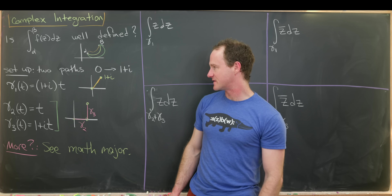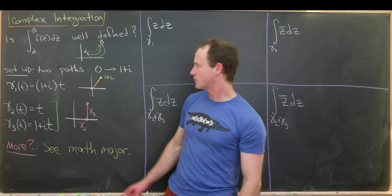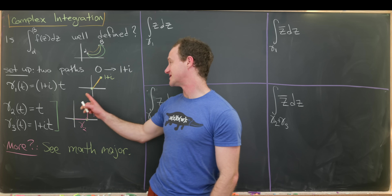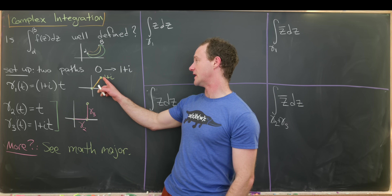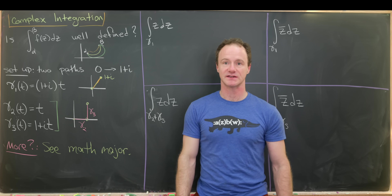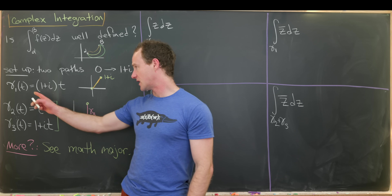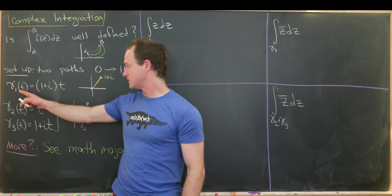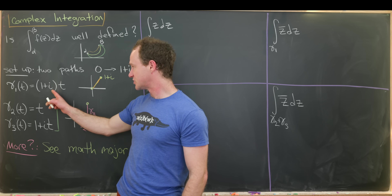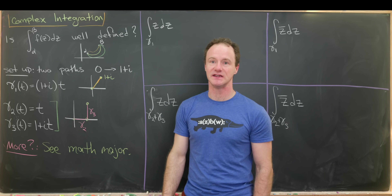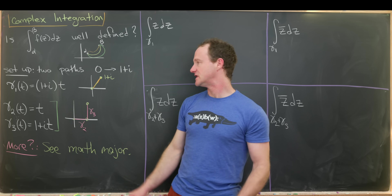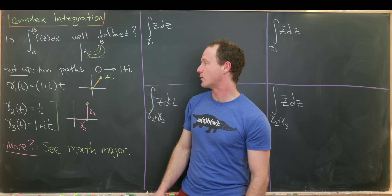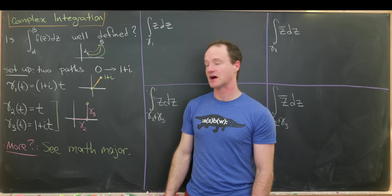The first path is the line segment starting at zero and ending at 1+i. We can parameterize that as gamma one of t = (1+i)t. So at t=0 we're at the origin and at t=1 we're at the point 1+i.